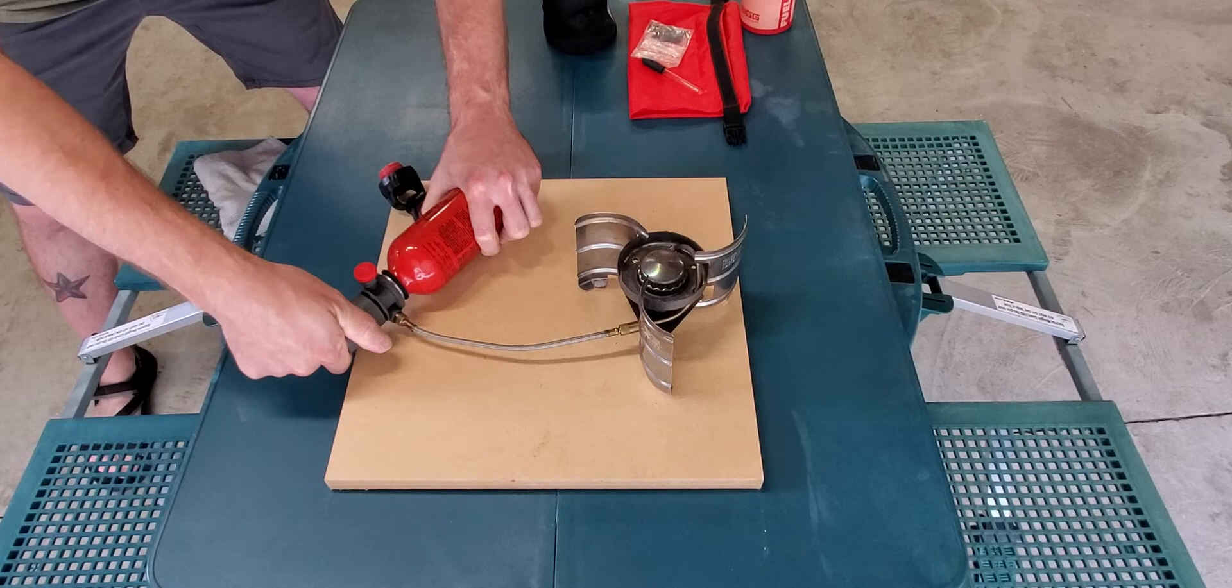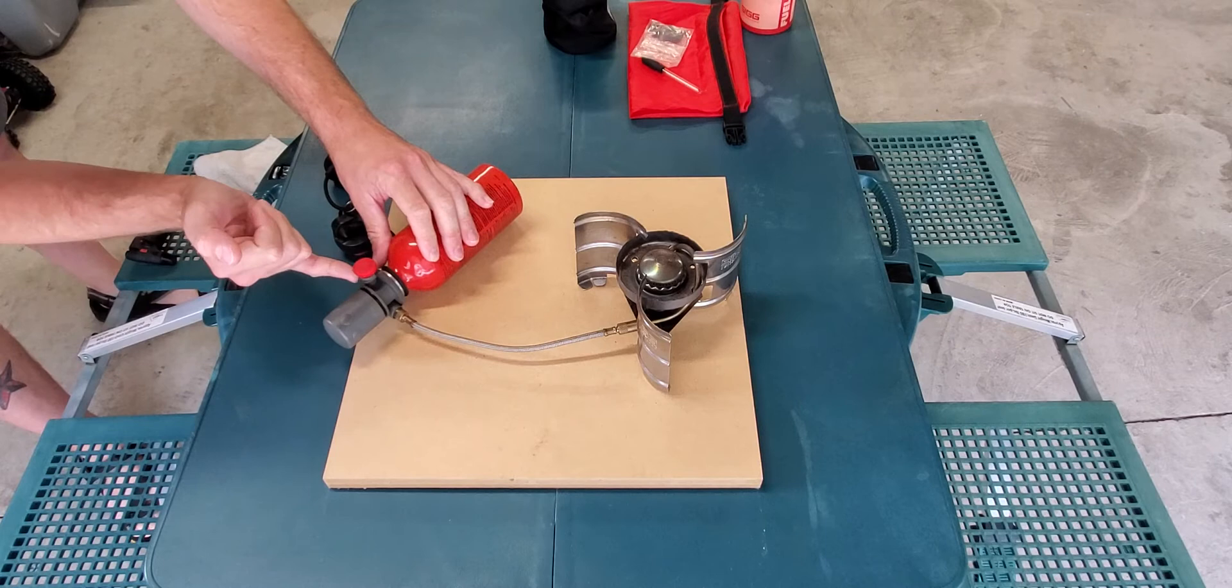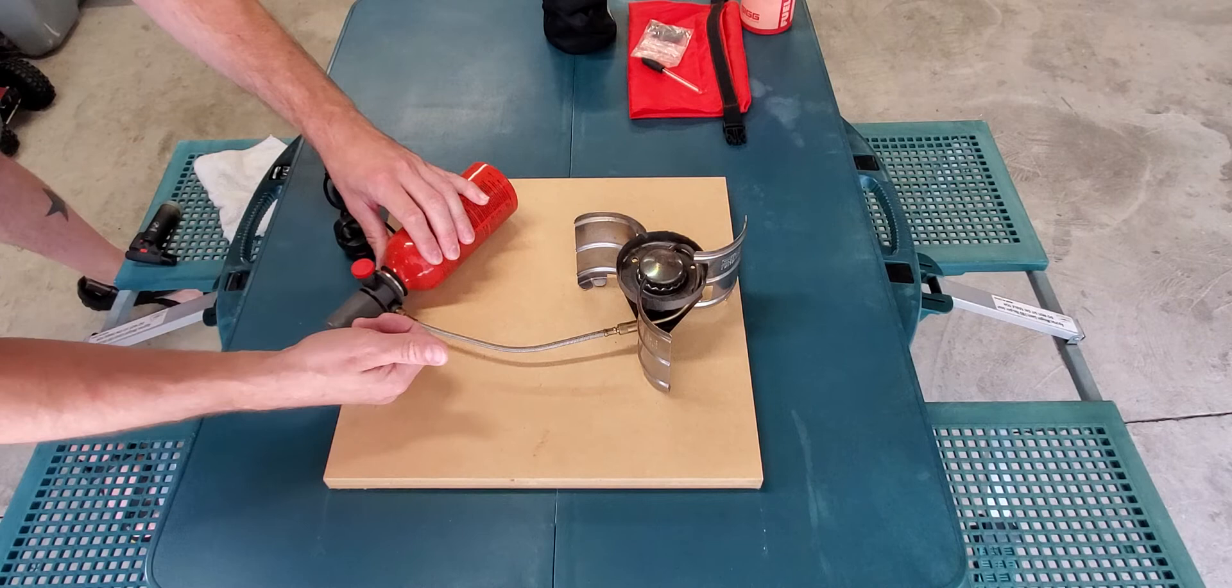Then with the bottle pressurized, I like to watch it for a minute around the pump. Make sure it's not leaking around the control nozzle, around the bottle itself, and around the fuel line connection.